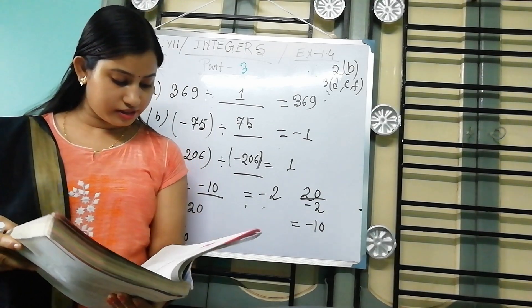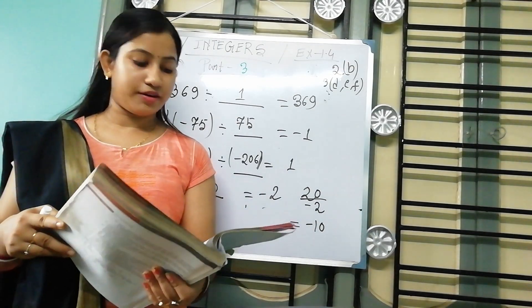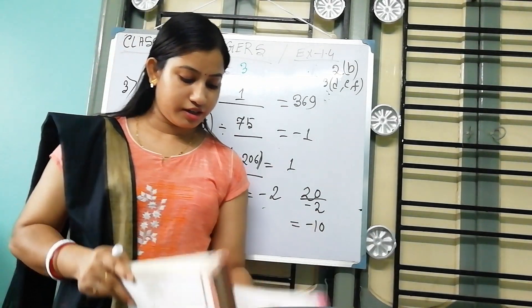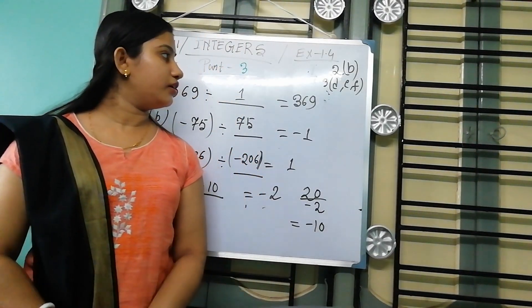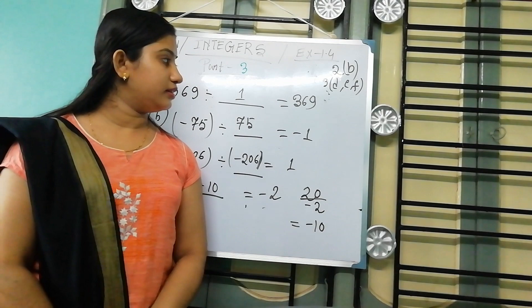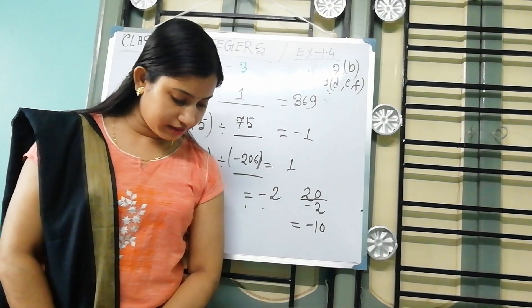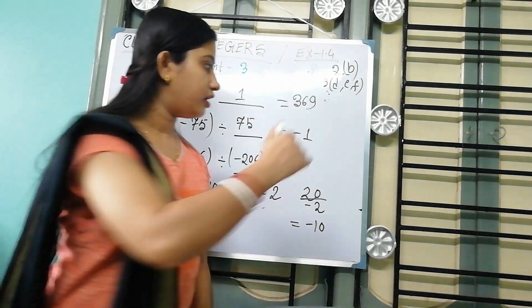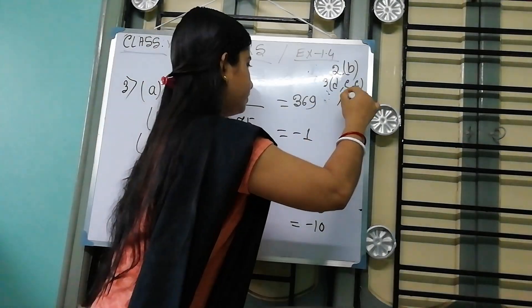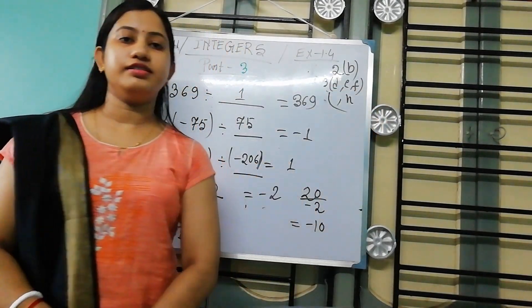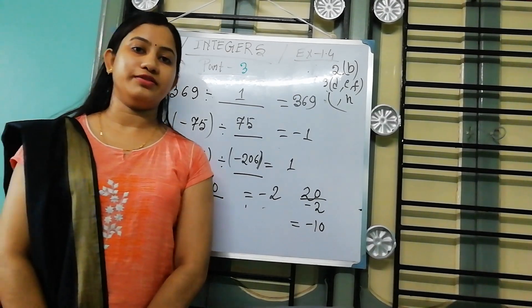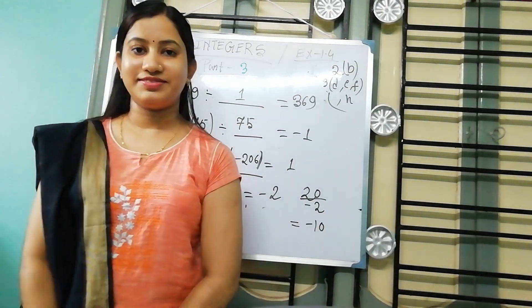Next day I will start from number 4. You should try at your home: 2B, 3D, E, F, and 4B. These are your homework. Thank you.